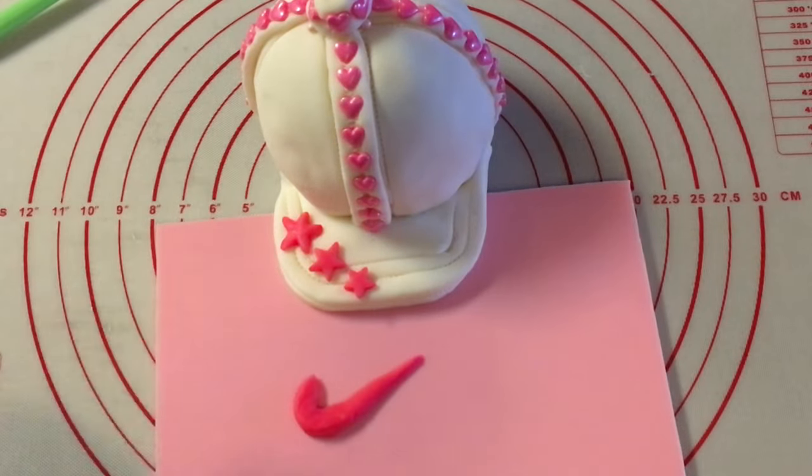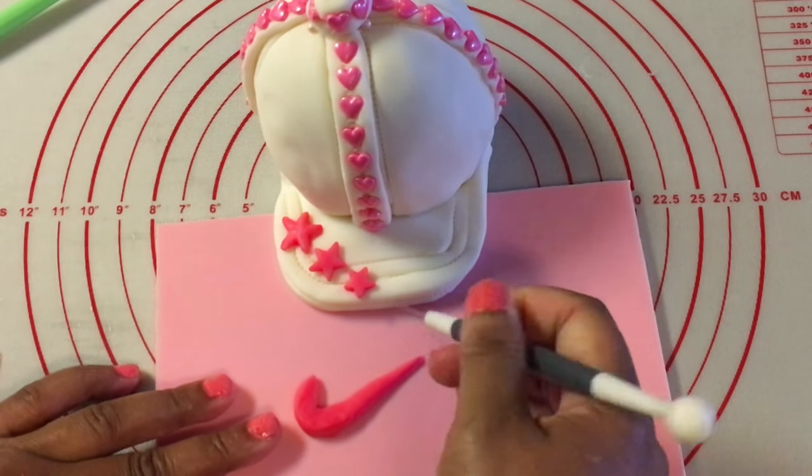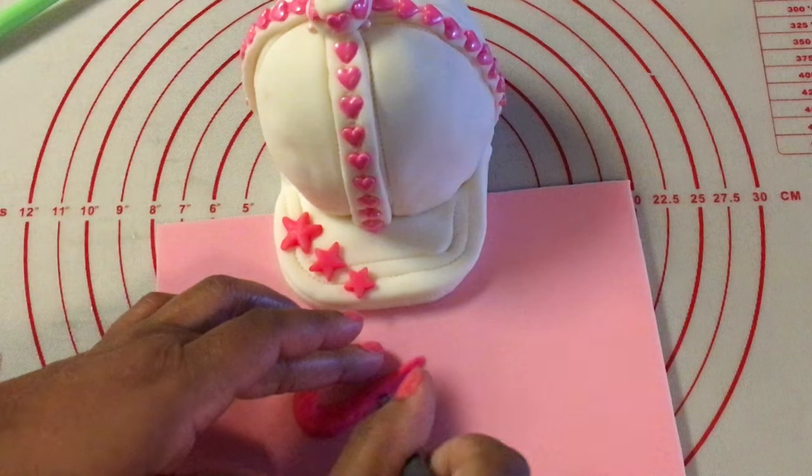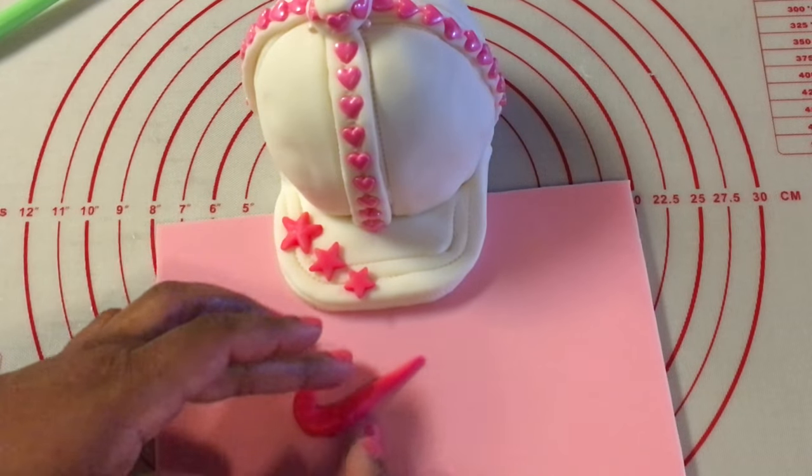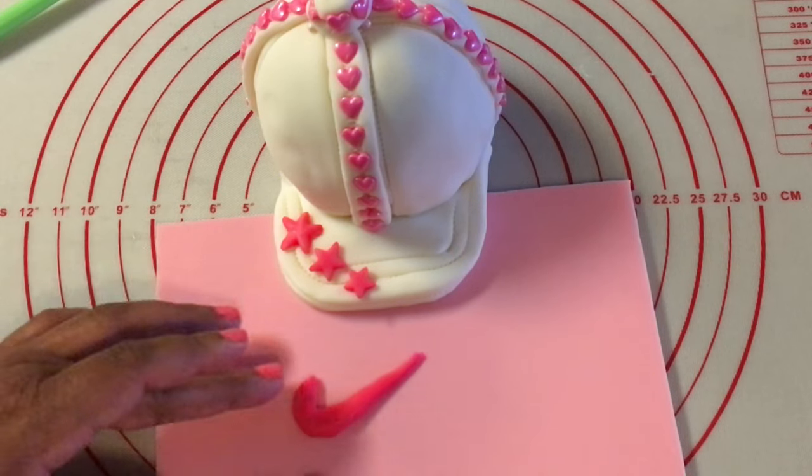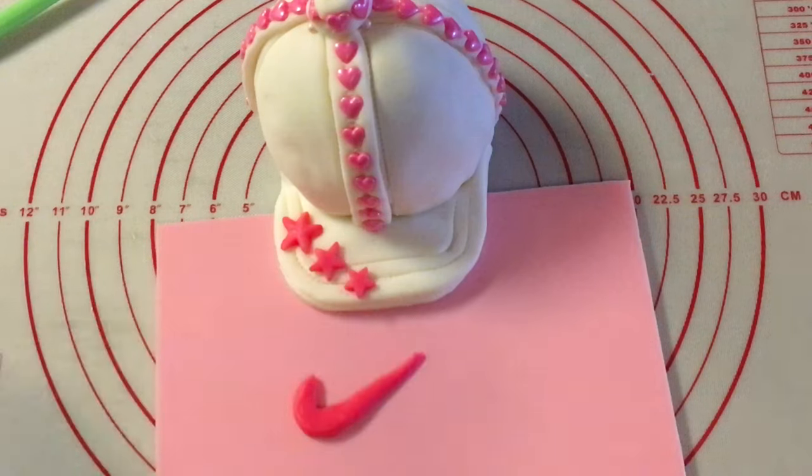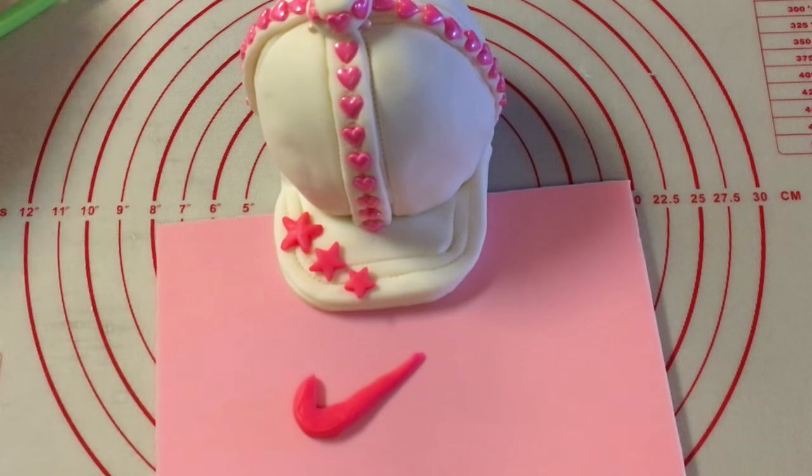Now you can freehand a Nike symbol or you can use an edible image. My edible image wasn't the same color pink. So I just went on ahead and free handed something up.